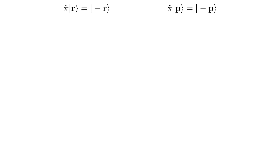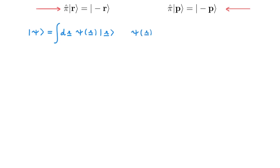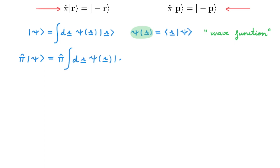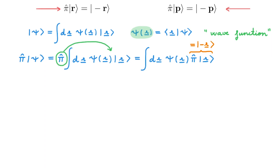We've defined the parity operator by its action on the eigenstates of the position operator, and from this definition we can deduce its action on arbitrary states, as we exemplified with the momentum eigenstates. Now let's look at the general case of an arbitrary state psi. The first step is to expand it in the position representation, where the expansion coefficients psi of r are given by the bracket r psi — these are what we call the wave function. Now let's consider the state obtained by acting with the parity operator on psi. Expanding psi in the position basis, we move pi inside the integral and use the action of the parity operator on the position basis states.